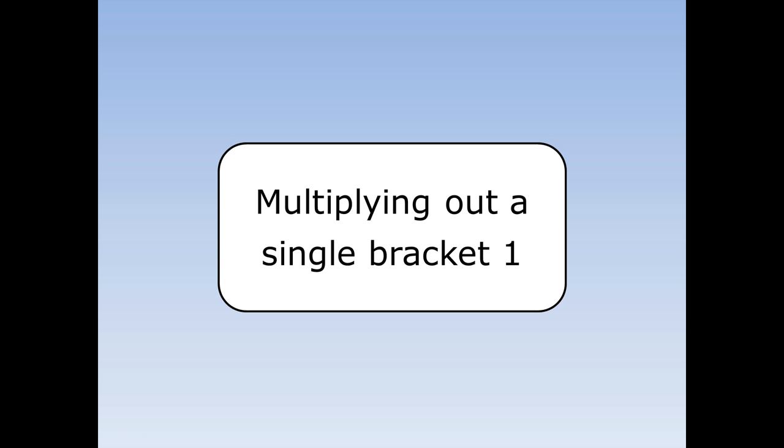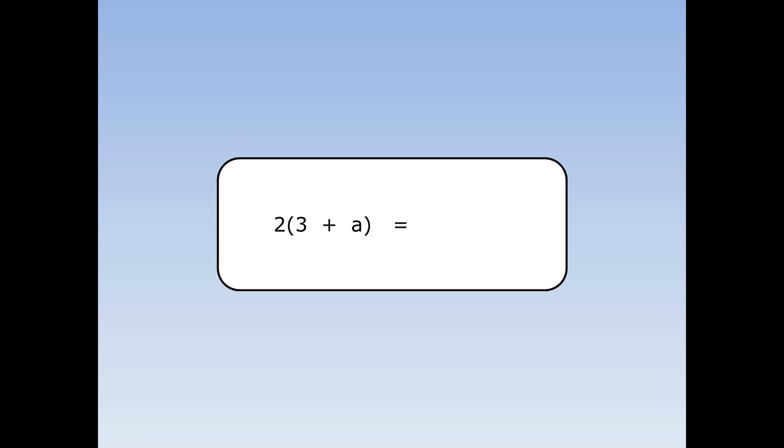Multiplying out a single bracket. We're going to multiply out this bracket. Remember, the 2 at the front multiplies both things inside. 2 times 3 is equal to 6. 2 times a is equal to 2a. When we multiply out 2 bracket 3 plus a, the answer is 6 plus 2a.